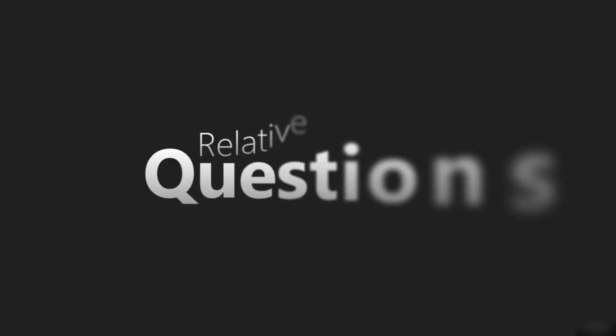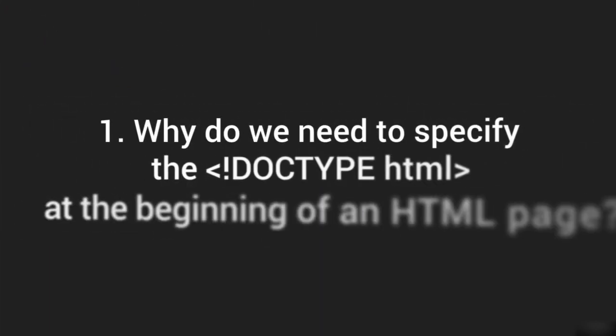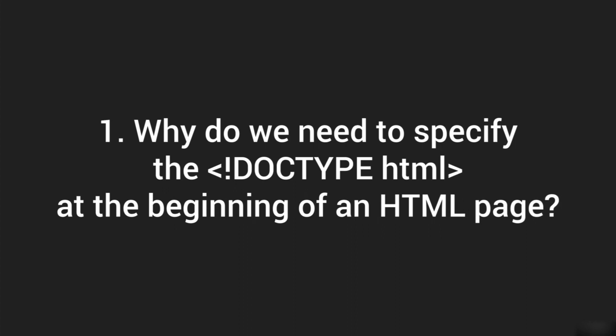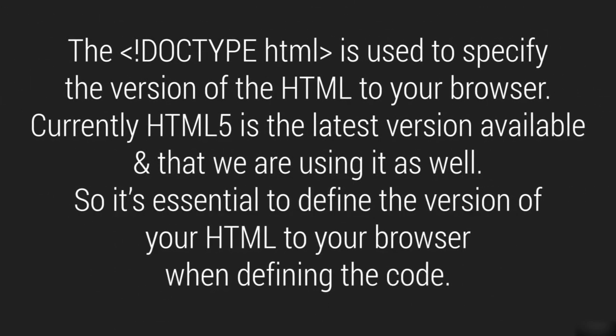Let's talk about a relative question. The question is: why do we need to specify DOCTYPE HTML at the beginning of the page? As mentioned earlier, DOCTYPE HTML is used to specify the version of HTML to the browser. Currently, HTML5 is the latest version available and that is what we are using. So it's essential to define the version of HTML to the browser when writing the code.